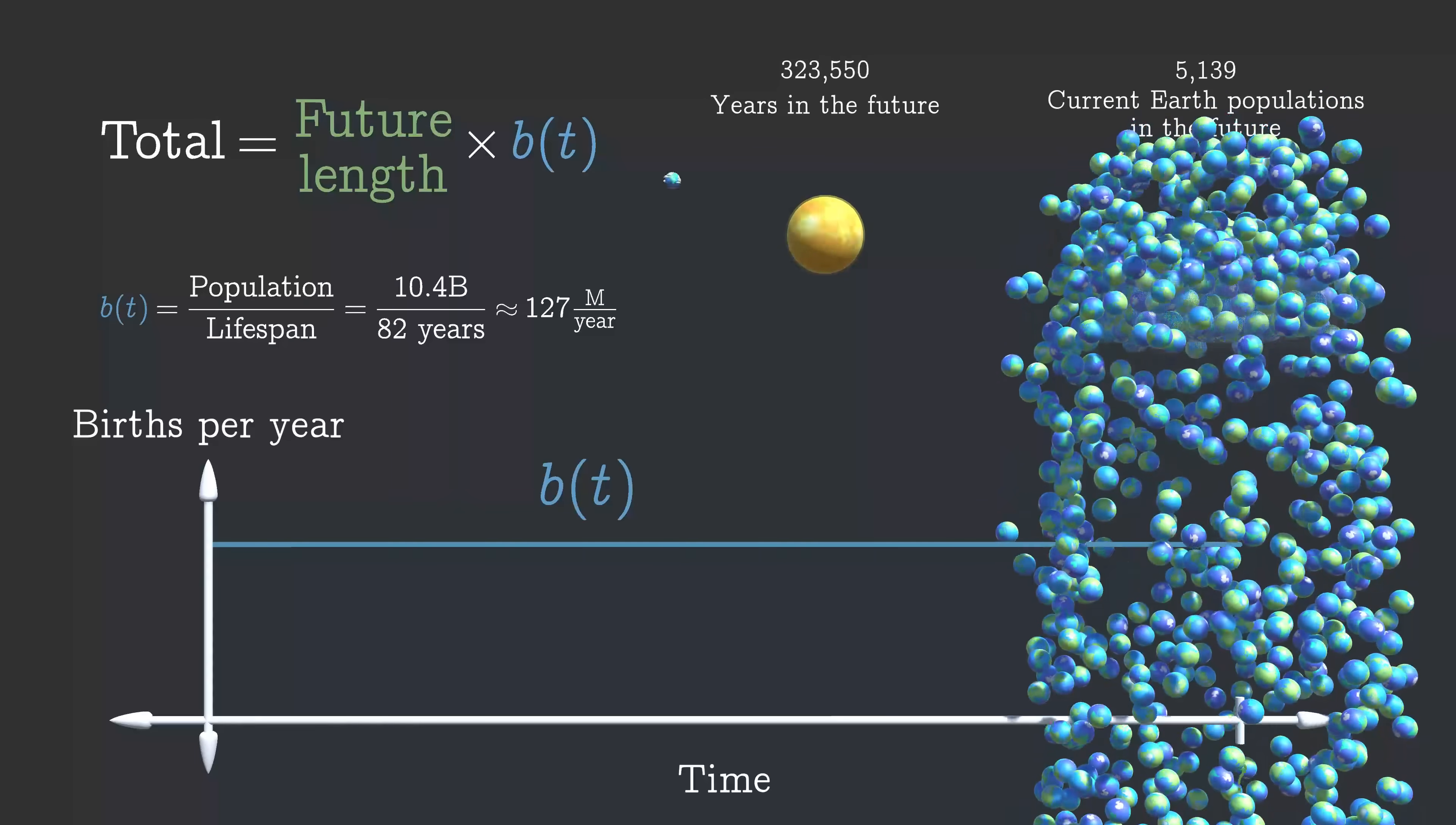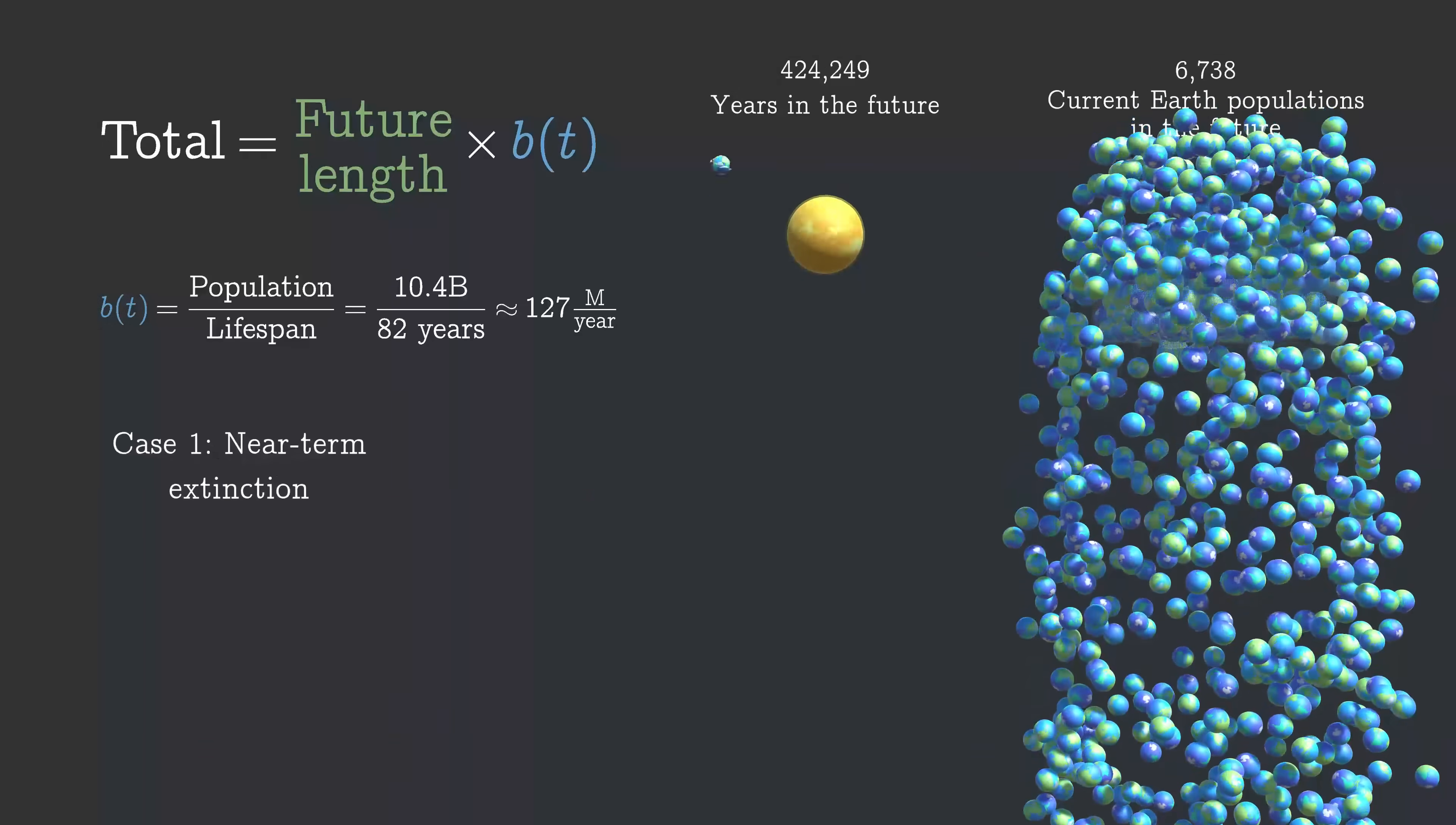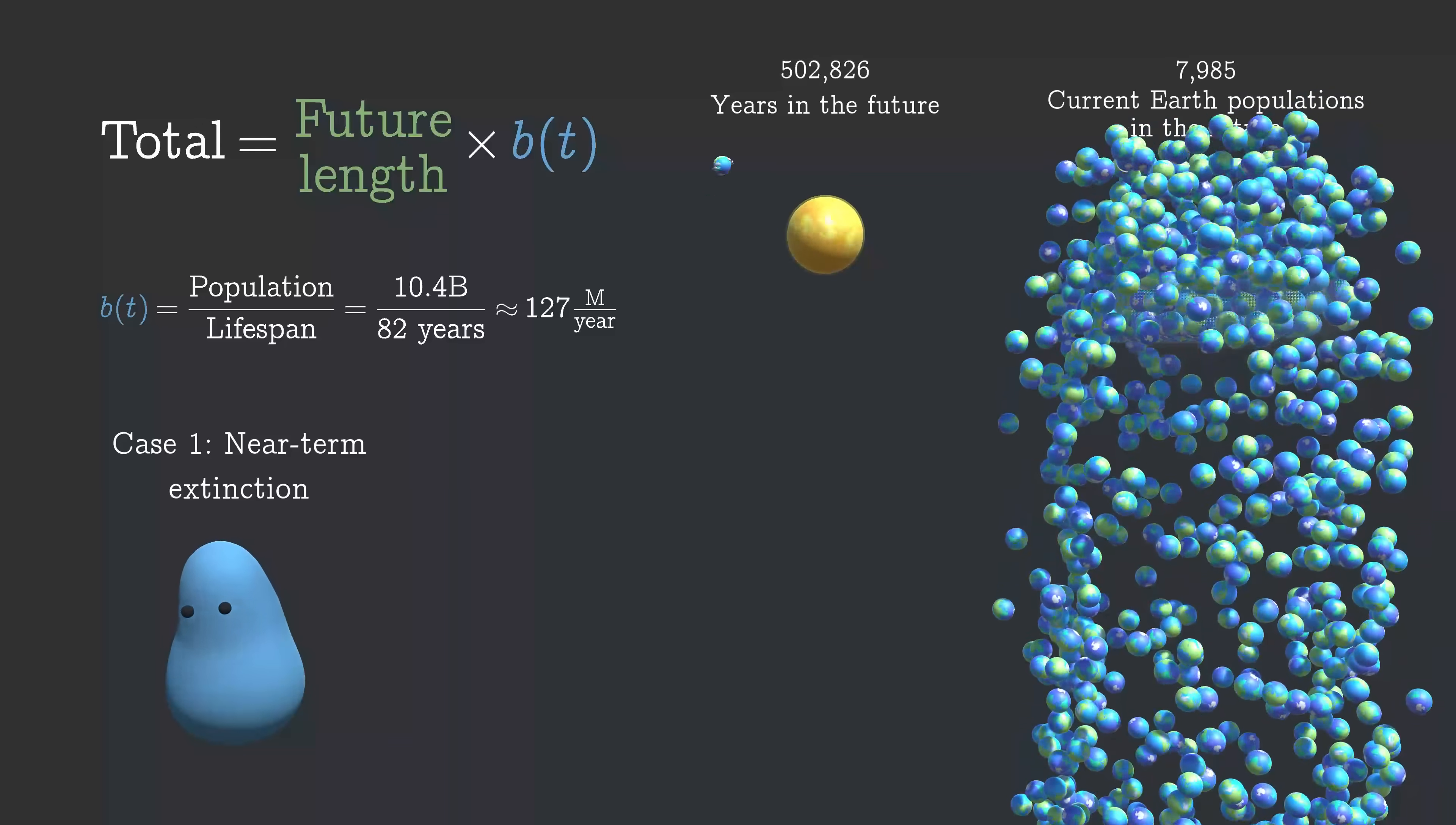There's a huge range of possibilities here, so we'll look at a few different cases going from pessimistic to optimistic. The first case is one where we somehow kill ourselves in the relatively near future. This makes the number of years in the future approximately zero, and so we're done.